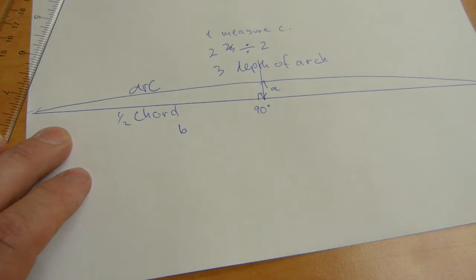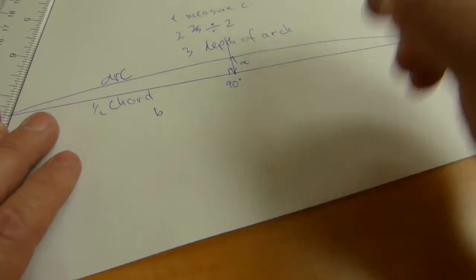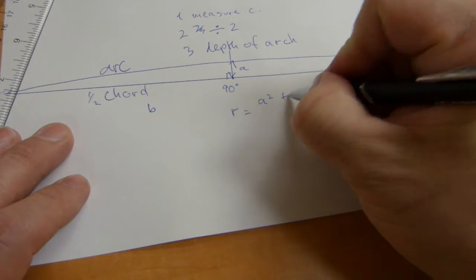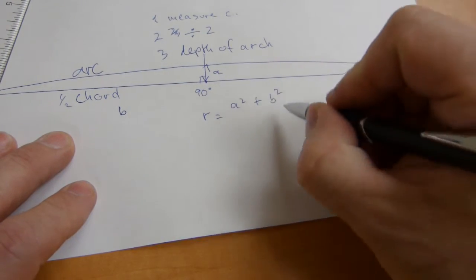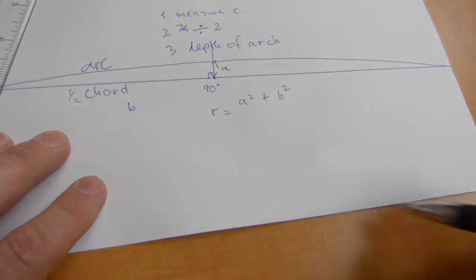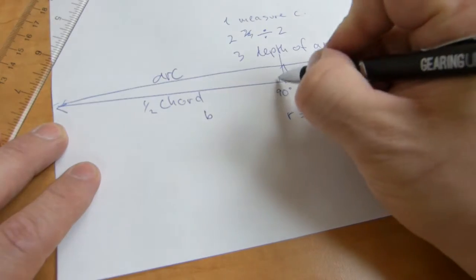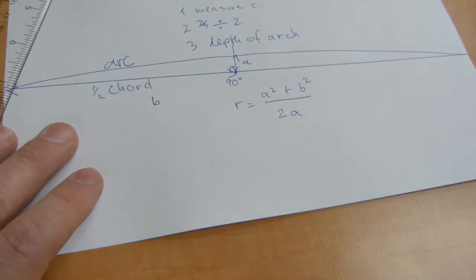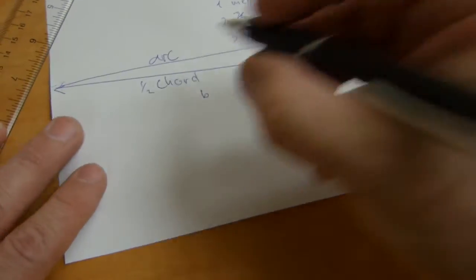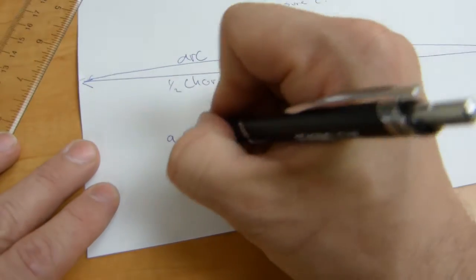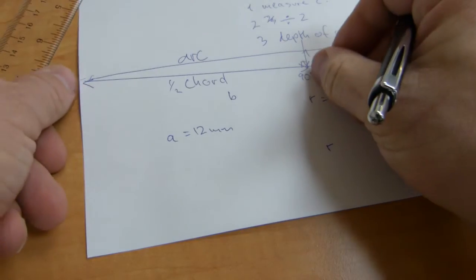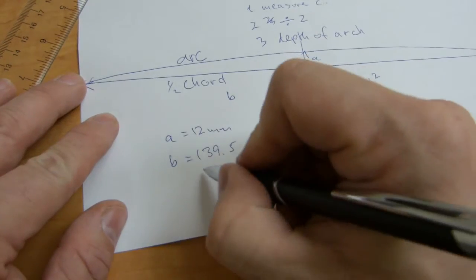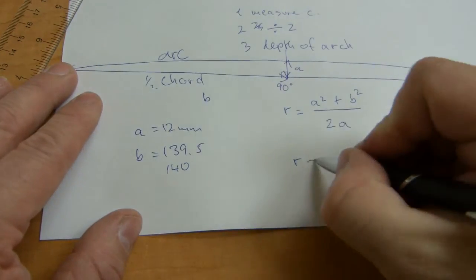And the math that goes with it looks like this. Because to get the radius, you have to square the depth of the arc and square half the cord. Then you have to add them together and divide it by twice the depth of the arc. In this case, my A measurement was 12 mm and my half the cord was 139.5, maybe 140 mm. Repeat it with both numbers.